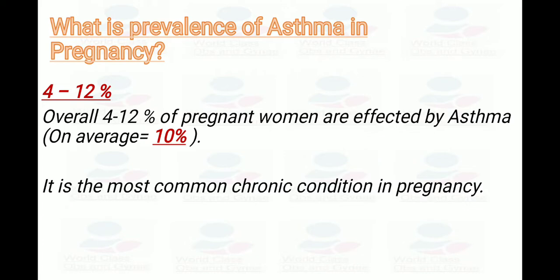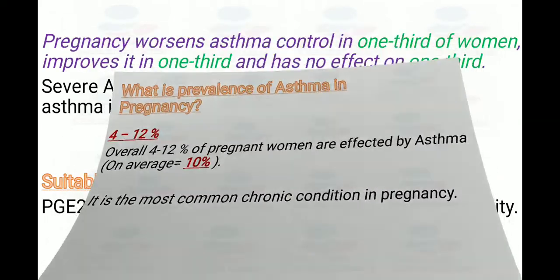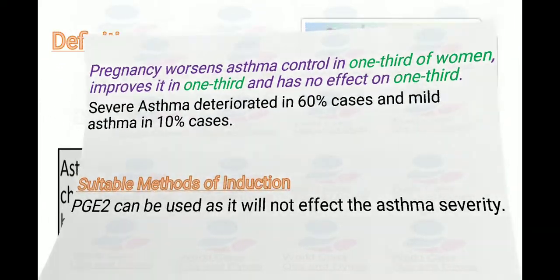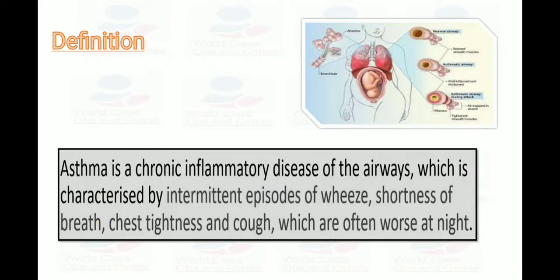Regarding pregnancy versus asthma control: in one third of women it improves, in one third it worsens, and in one third it has no effect — the one-third formula. Asthma deteriorates in 60 percent of severe cases and in 10 percent of mild cases. An important point for exam use: the suitable method of induction is PGE2, which can be used as it will not significantly affect asthma severity.